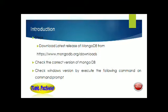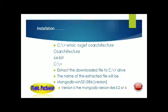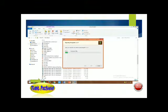The installation starts with the following architecture as you see on the Windows screen. MongoDB uses the win32 i386 version, and the version is MongoDB 3.2 or 4. When you click downloads, the file name is called MongoDB, as shown in the previous slide.